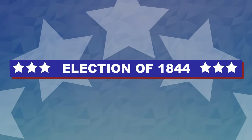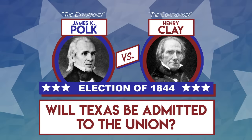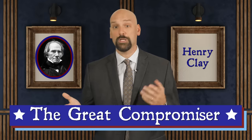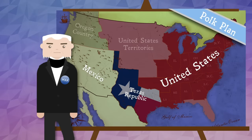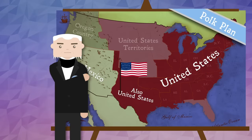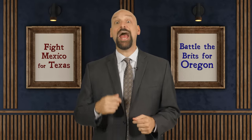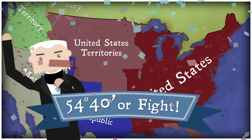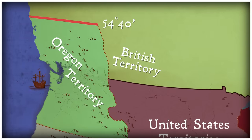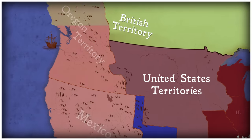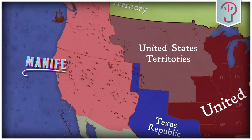The election of 1844 pitted James K. Polk against Henry Clay and was centered on whether or not Texas would be admitted as a state. Ironically, Henry Clay was known as the Great Compromiser and had played a major role in the Missouri Compromise. In this election, however, Henry Clay met his match. Polk ran on an aggressive platform of not only annexing Texas but also claiming all the land to the Pacific Ocean. Polk advocated fighting Mexico in the south for Texas and fighting Great Britain in the north to take the Oregon Territory — "54°40' or fight!" The desire to claim all this land was later coined Manifest Destiny.